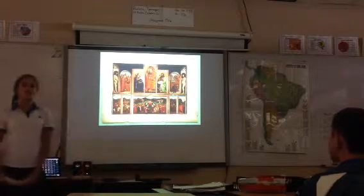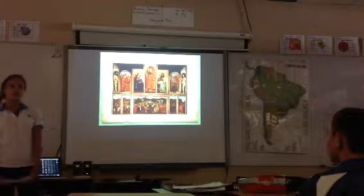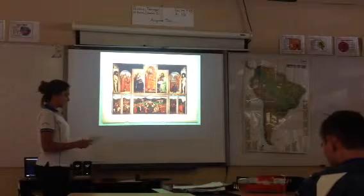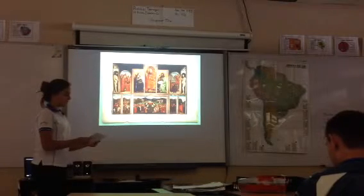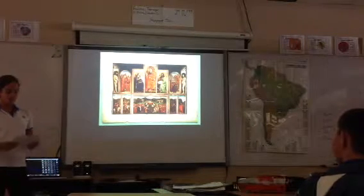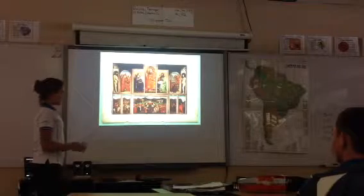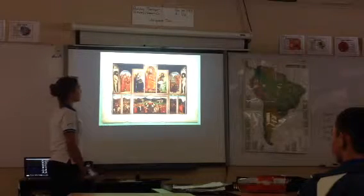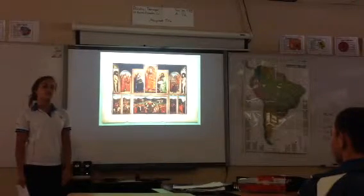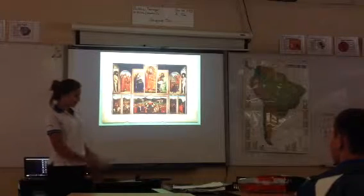Along with his brother Hubert, he created the Ghent Altarpiece, also called The Adoration of the Mystic Lamb, or the Lamb of God. This painting was started by Hubert and then finished by Jan after the death of his brother Hubert.